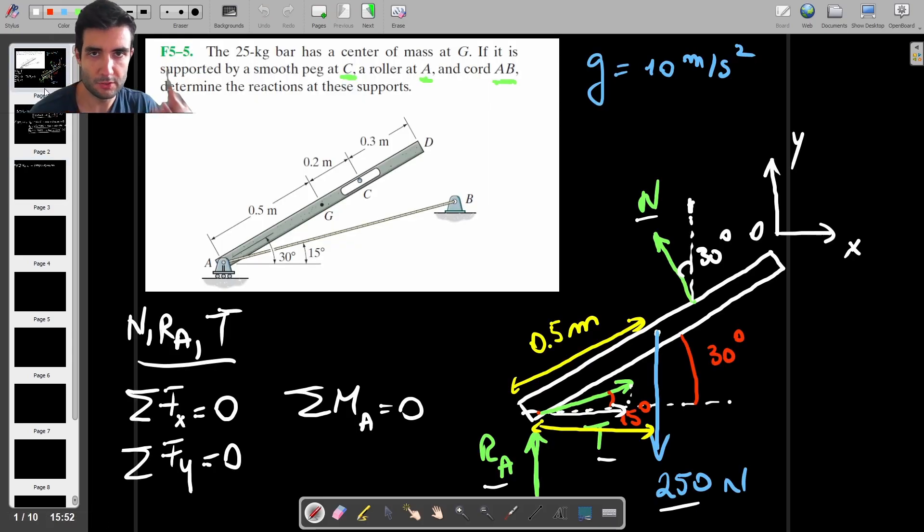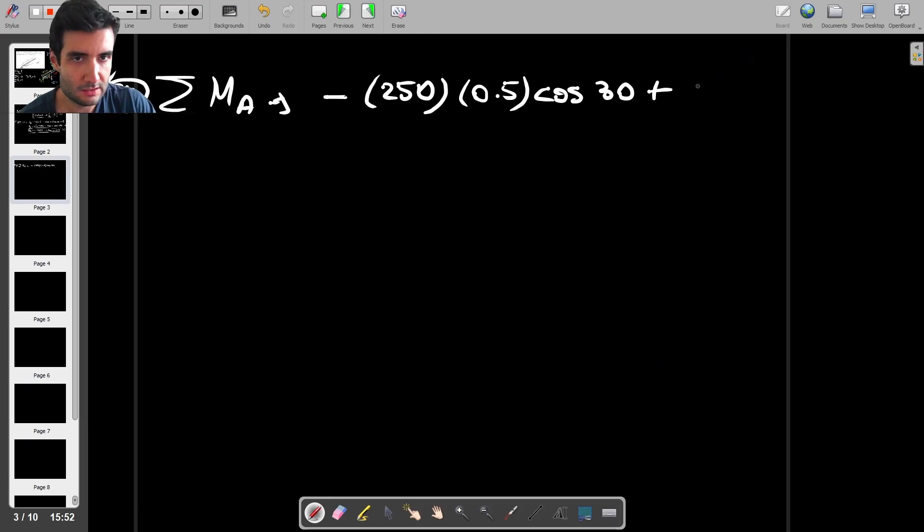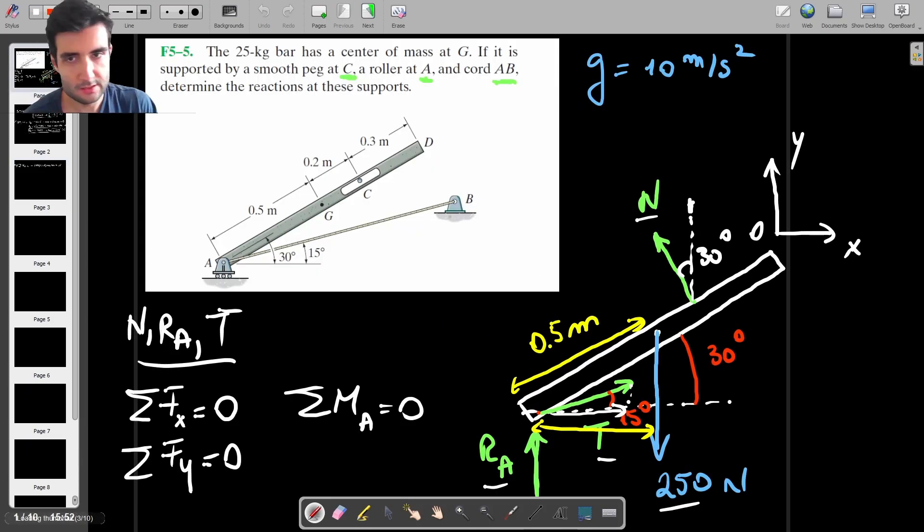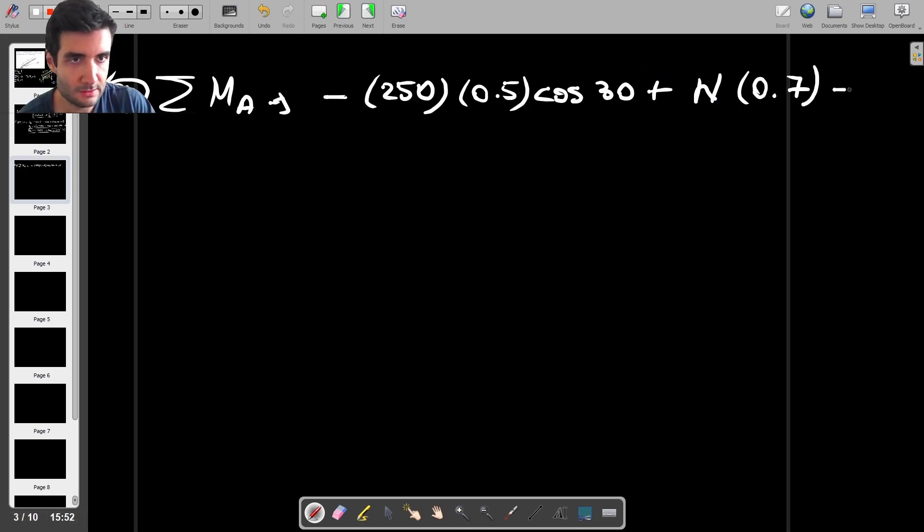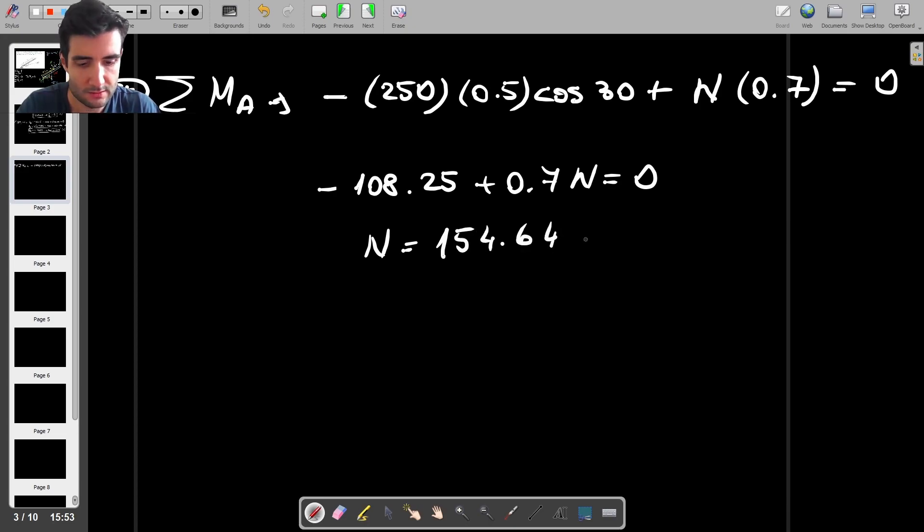And then we've got the moment due to N which is counterclockwise, so that's going to be plus N multiplied by—so this is 0.5 until the center and this bit here is 0.2, so in total we're going to have 0.7—and this is equal to zero. So the first part is going to be 250 times 0.5 times cosine of 30, which is minus 108.25, plus 0.7N equals 0. So N is going to be 108.25 by 0.7, so this is 154.64 Newtons approximately.